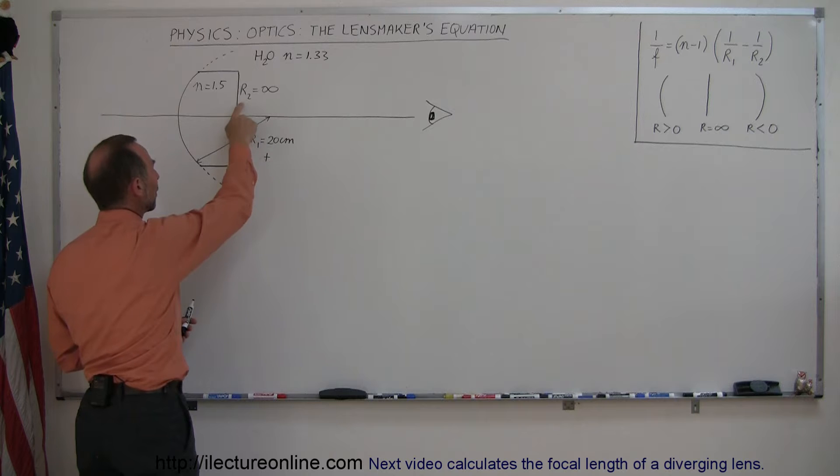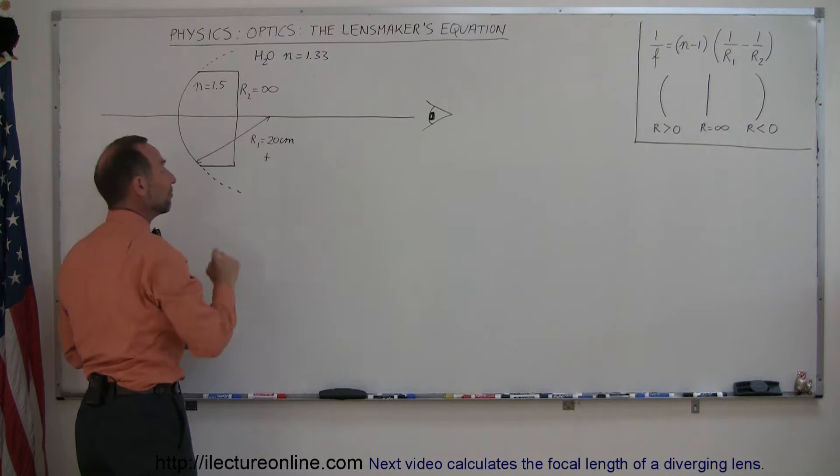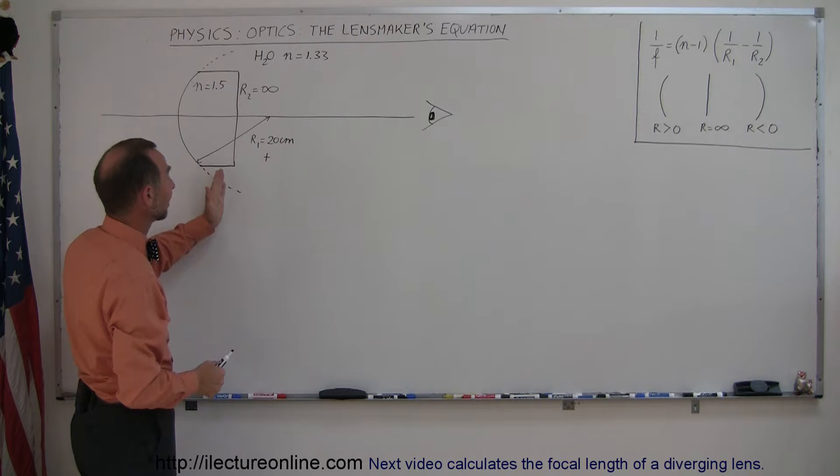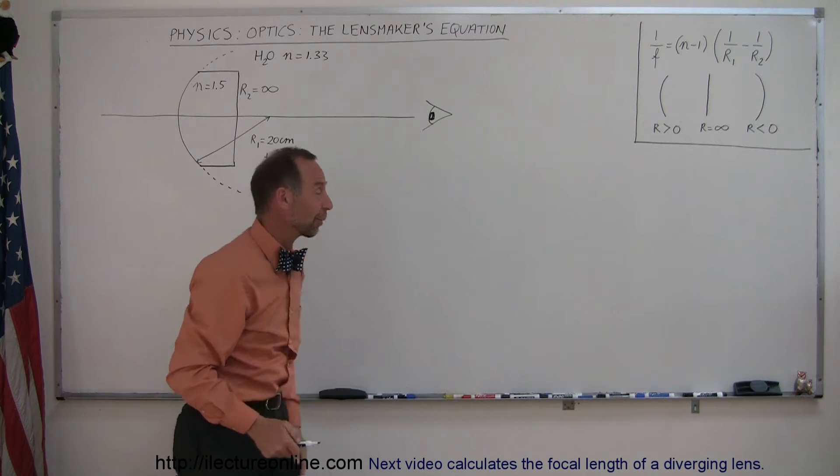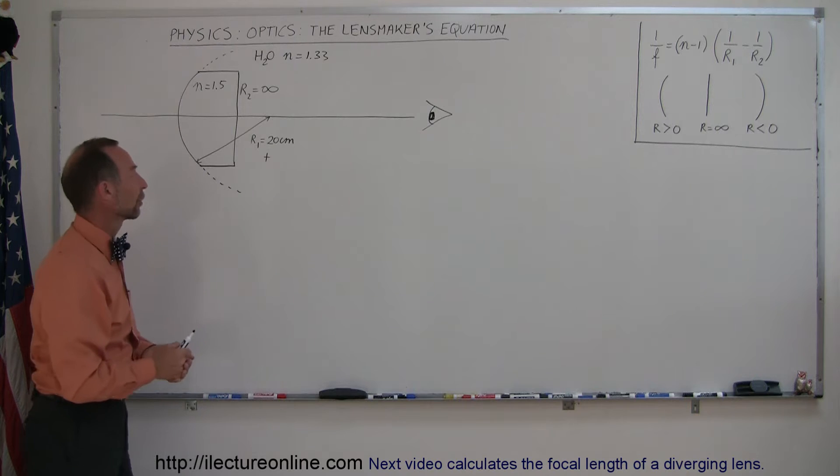That means the radius of curvature of the back is infinite. If you try to find the center of curvature of a straight line, you have to go back and back and you'll never get there. That's why the center of curvature for a straight edge on the lens is infinite.